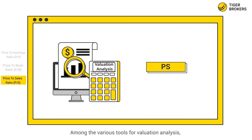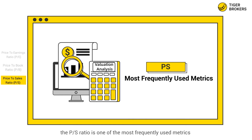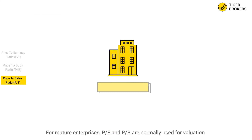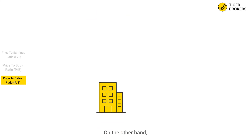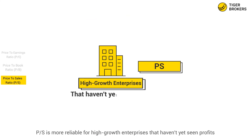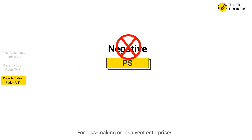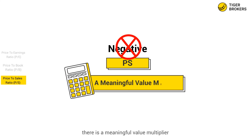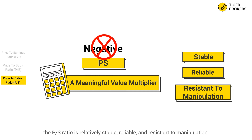Among the various tools of valuation analysis, the PS ratio is one of the most frequently used metrics. For mature enterprises, PE and PB are normally used for valuation. On the other hand, PS is more reliable for high-growth enterprises that haven't yet seen profits, since the PS ratio will not be negative. For loss-making or insolvent enterprises, it still provides a meaningful value multiplier. At the same time, the PS ratio is relatively stable, reliable, and resistant to manipulation.